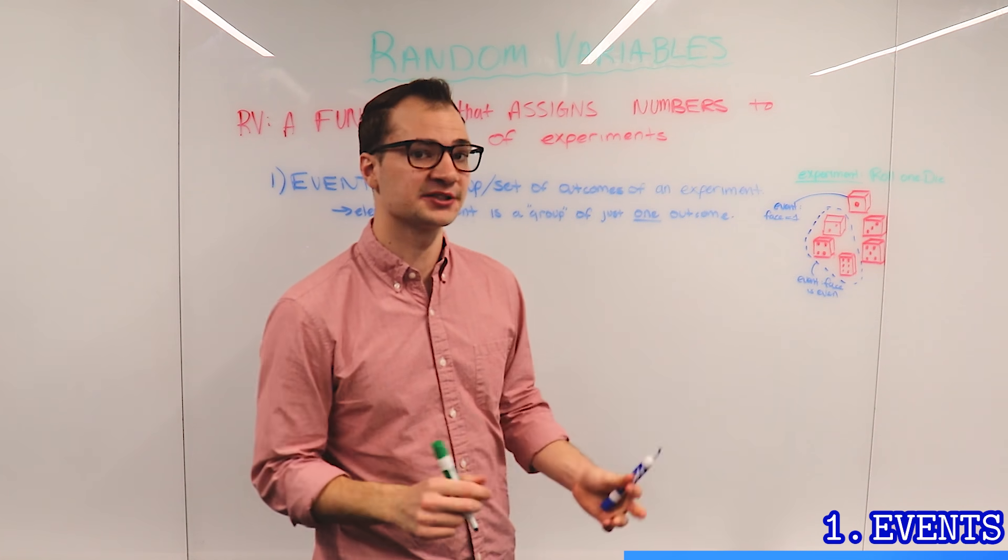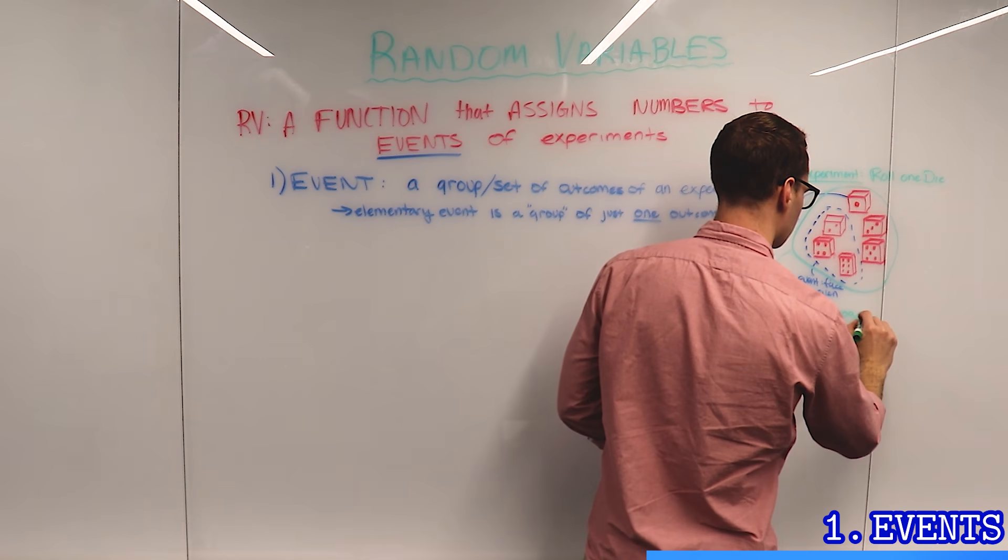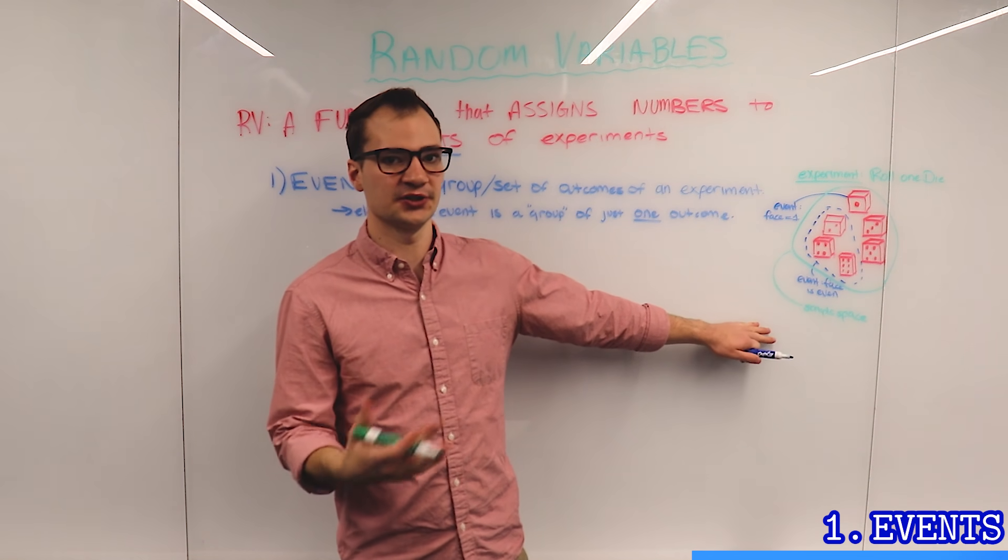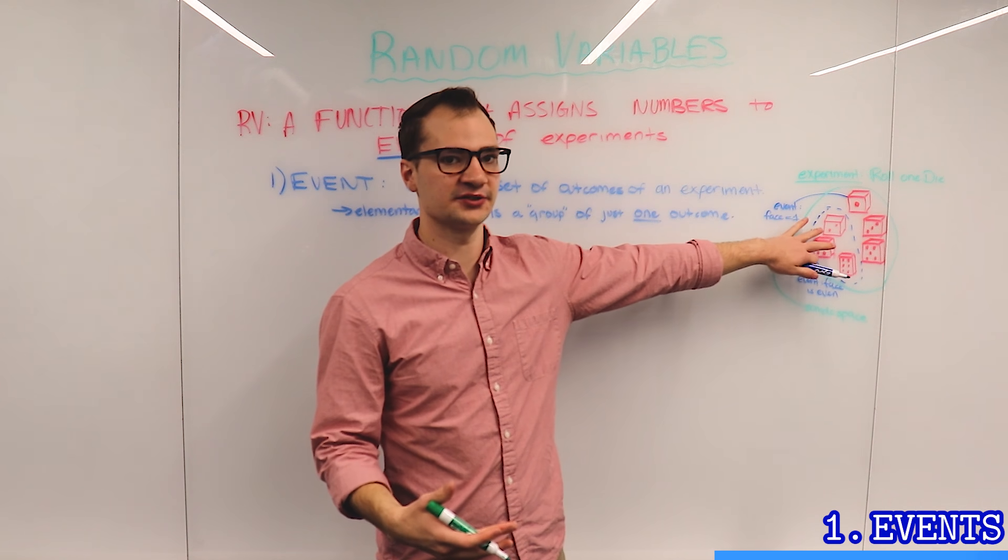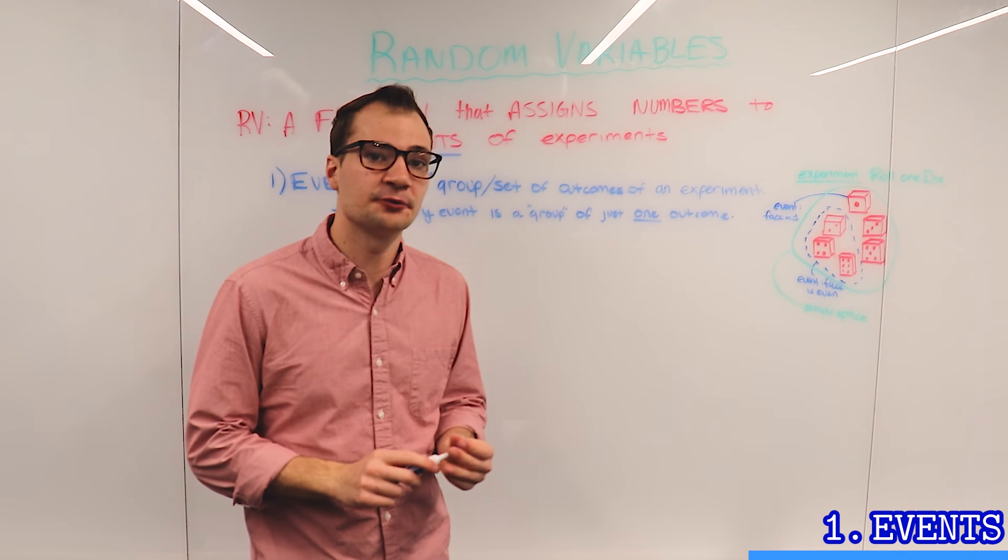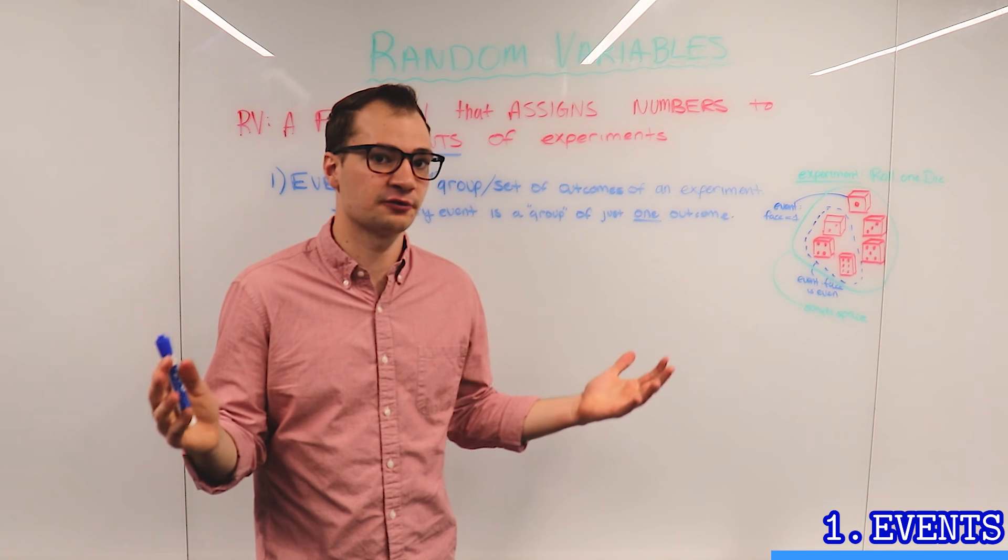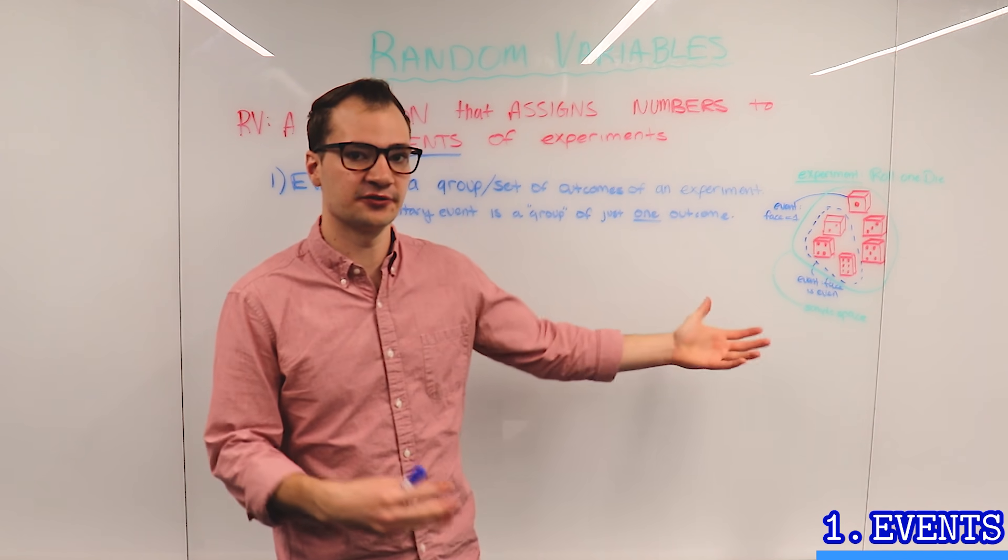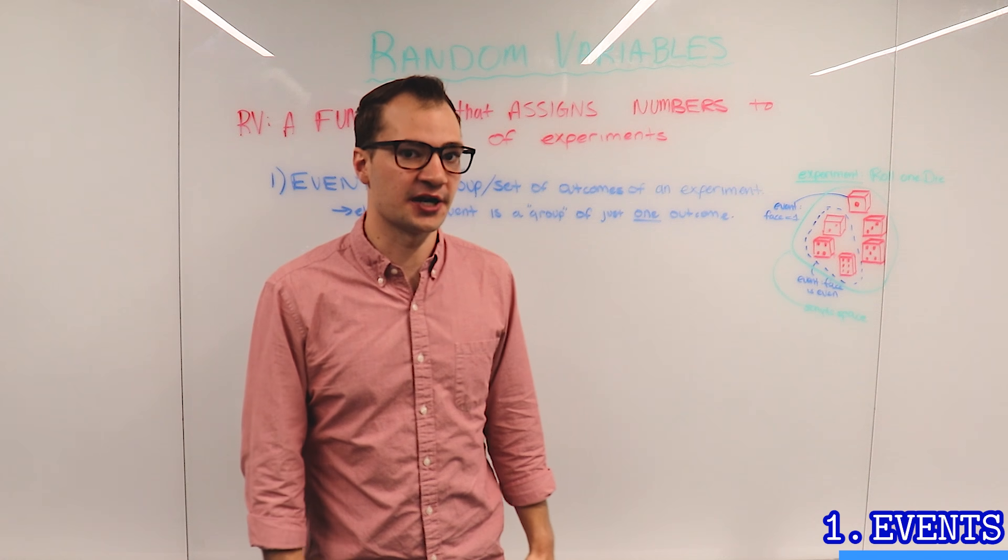The event that contains all possible outcomes is called sample space. We're used to hearing that the probability of the sample space occurring is 1, because one of these events, one of these outcomes, must occur. The key is that we can define the event however we want, whatever we're interested in. If we're interested in knowing even versus odd, that's what we would define the event as.